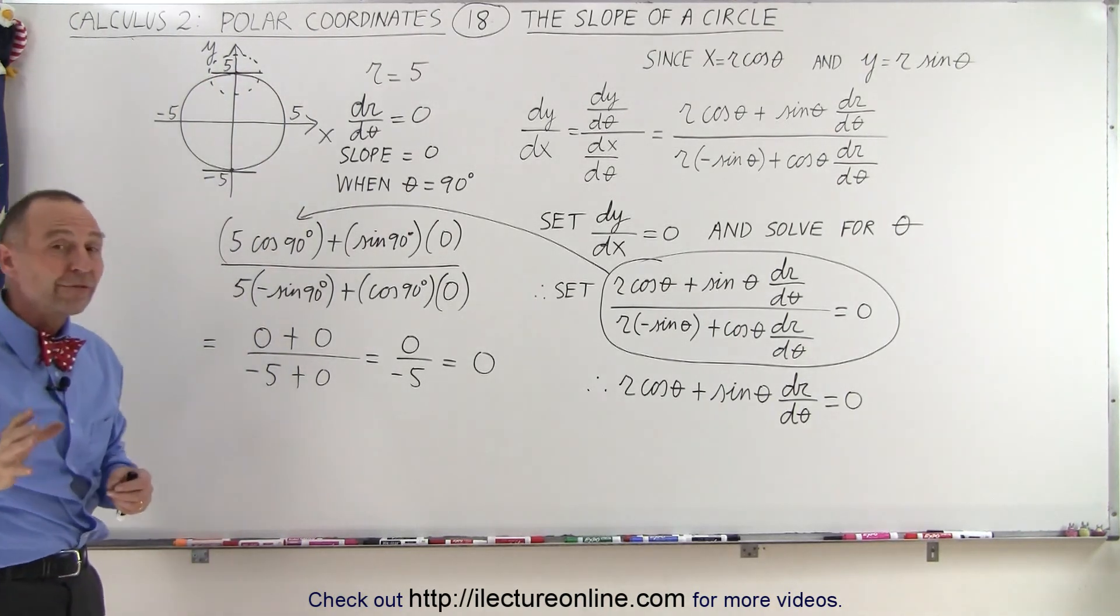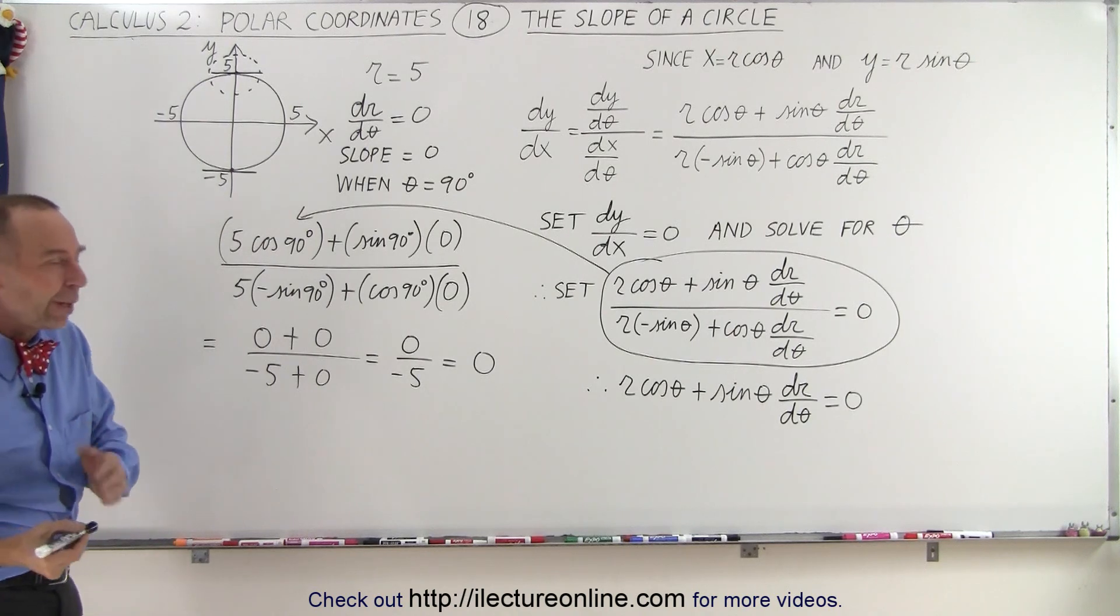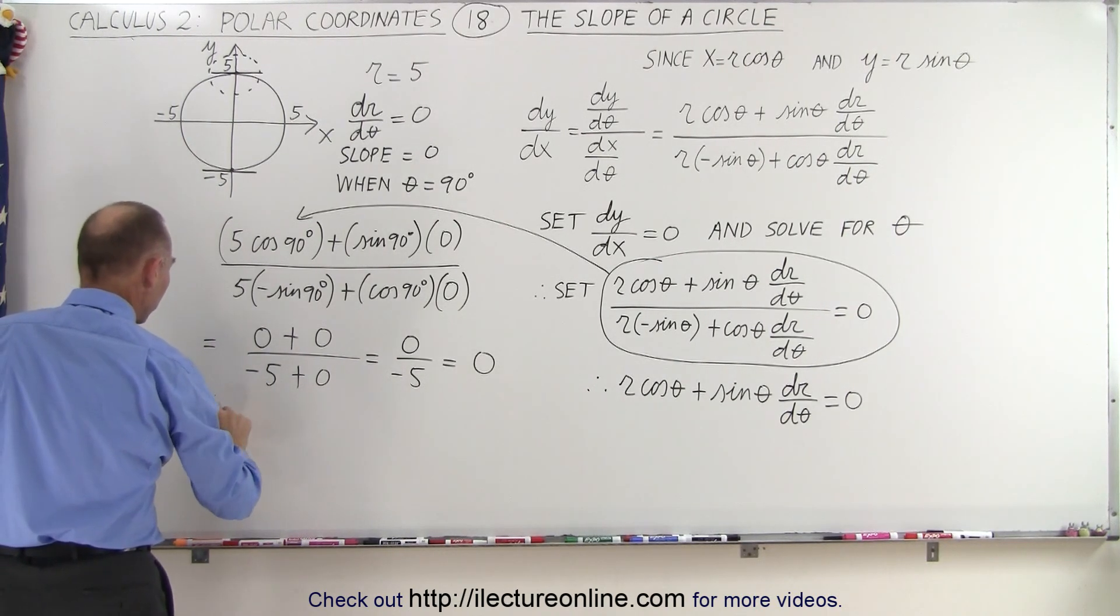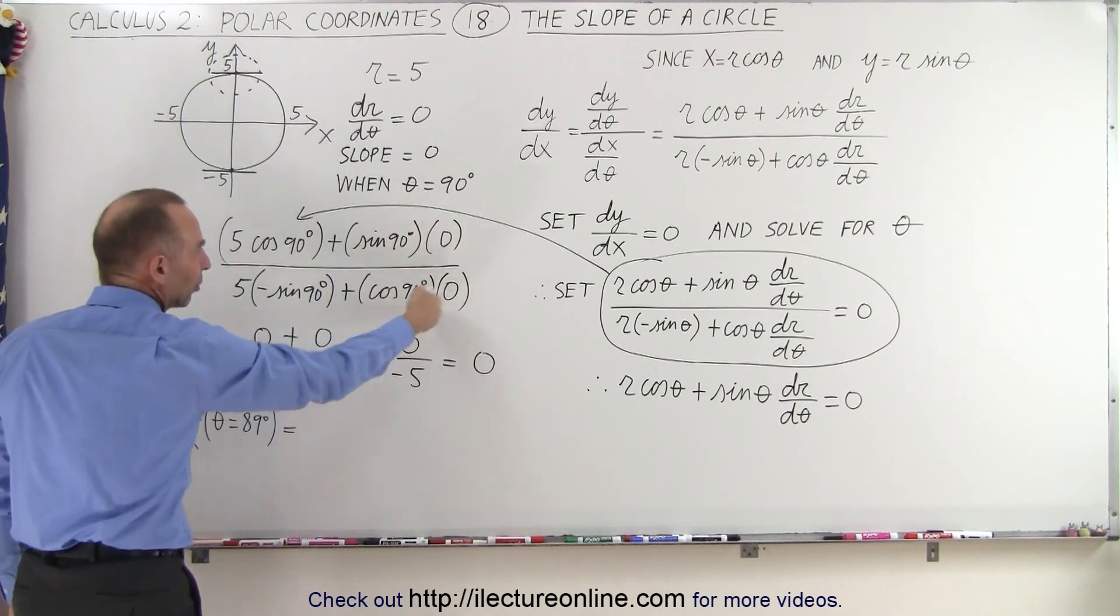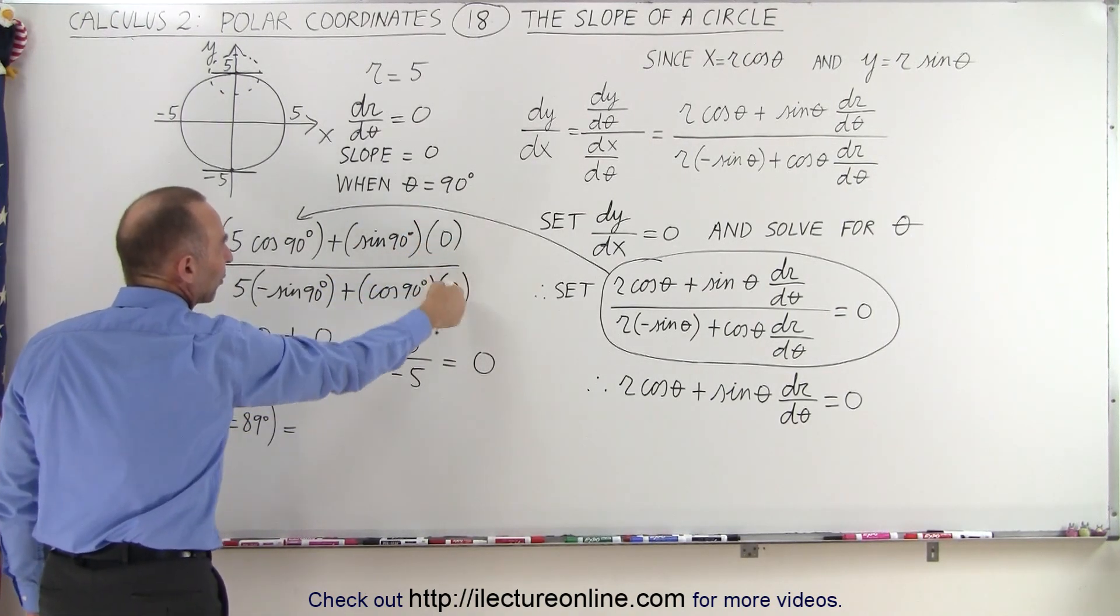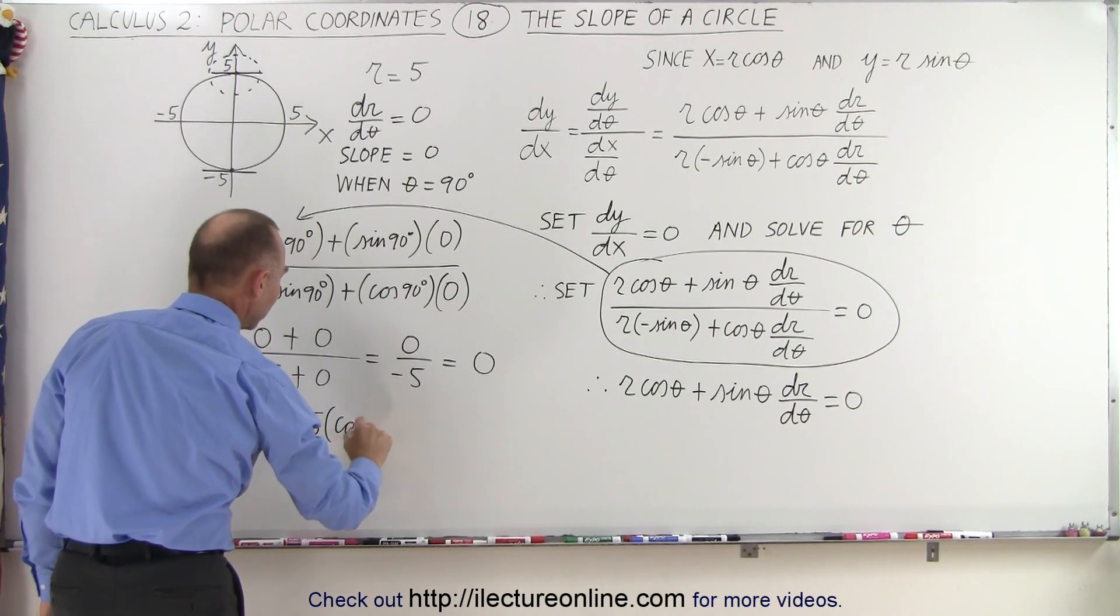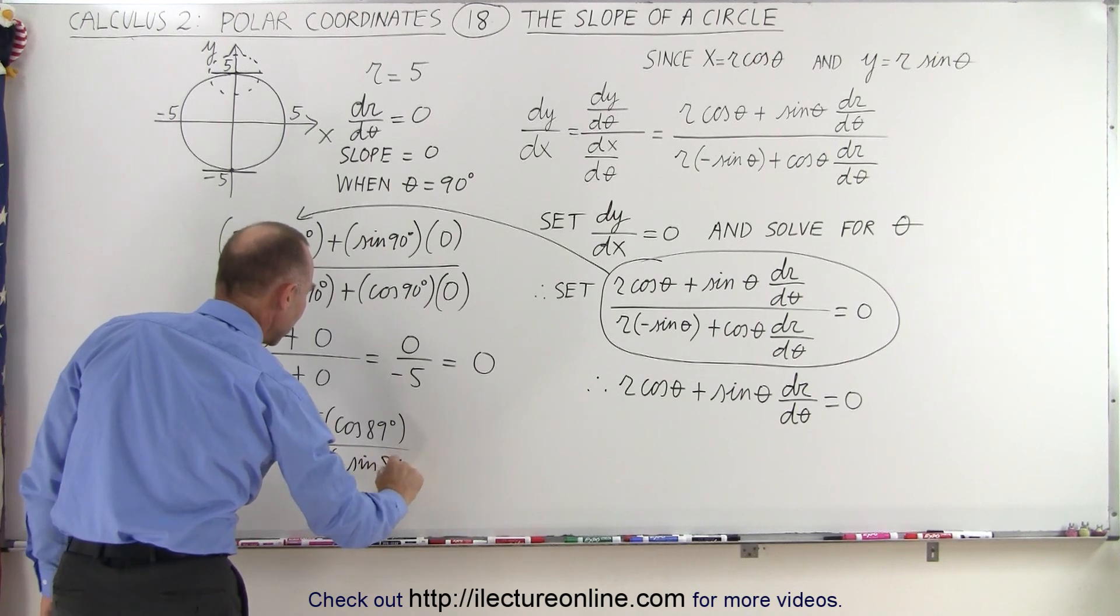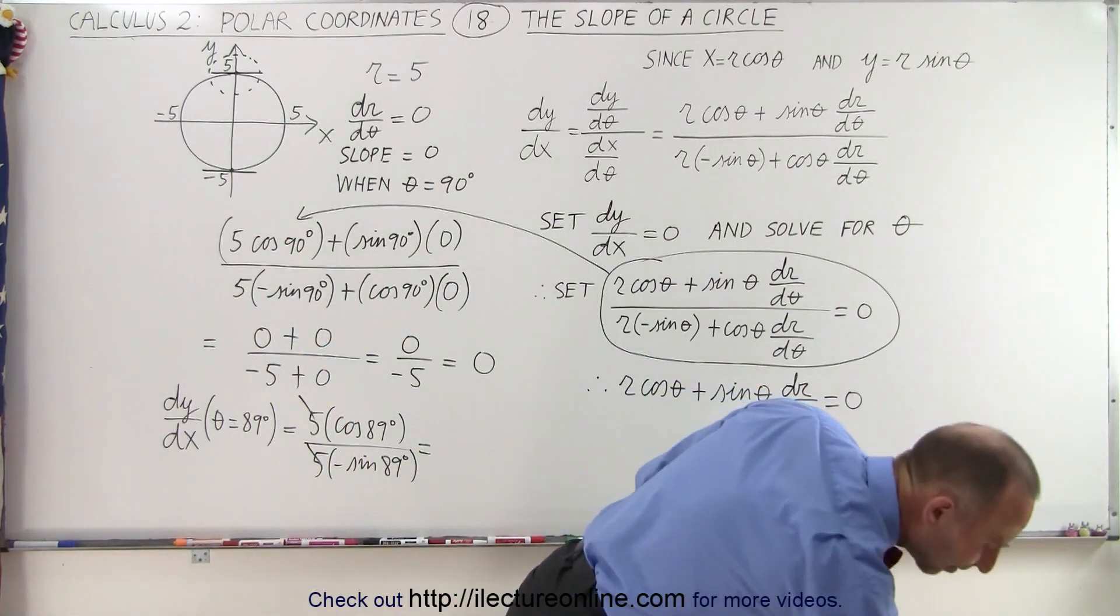So what we're going to do now is evaluate the slope at two other angles. We're going to do it at 89 degrees and evaluate again the slope at 91 degrees. So we're going to find dy/dx for theta equals 89 degrees. So let's go ahead and plug in 89 degrees everywhere. Now this will still be 0 because the derivative of r with respect to theta is 0. But this will no longer be 0. So we get 5 times the cosine of 89 degrees divided by 5 times the negative sine of 89 degrees. Notice that the 5s cancel out and we end up with the cosine of 89 divided by the sine of 89.